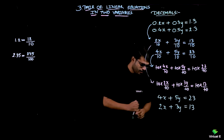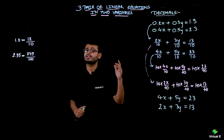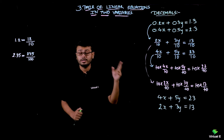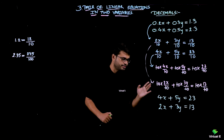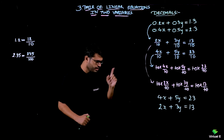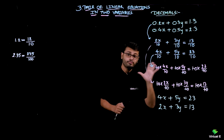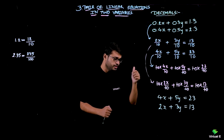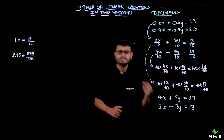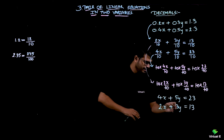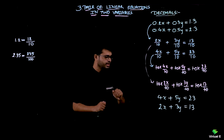Now we have four methods to choose from: graphical method (you need graph paper), substitution method, elimination method, or cross multiplication method. I am choosing the elimination method. Looking at the coefficients: x has 4 and 2 — not the same; y has 5 and 3 — not the same. So I need to make one pair of coefficients equal first.